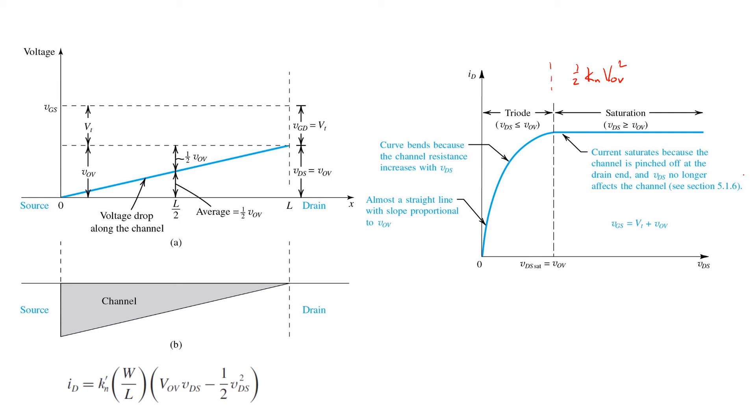Just remember, this entire curve is traced out by keeping VGS constant at a value above the threshold voltage. If we change VGS, we get a new curve here. For example, if we lower VGS while still keeping it above the threshold voltage, we remember that this increases at first with a shallower slope.